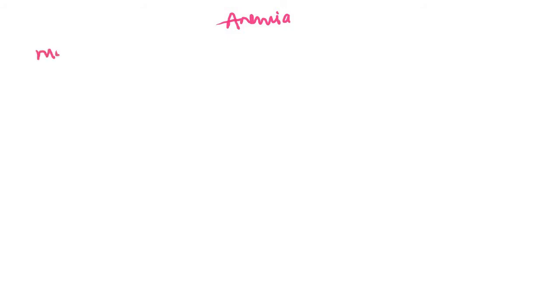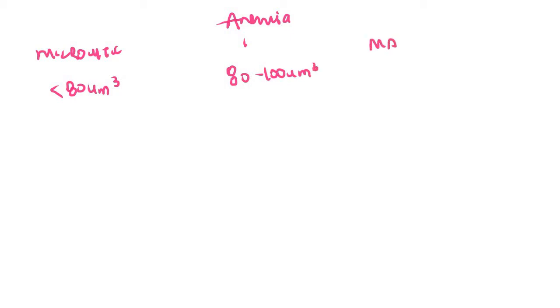The anemias were classified into three subtypes on the basis of MCV. These were the microcytic anemias in which the MCV was less than 80 micrometer cube, the normocytic anemias in which the MCV was between 80 to 100 micrometer cube, and the macrocytic anemias in which the MCV was more than 100 micrometer cube. In this video, we'll primarily focus on the microcytic anemias.